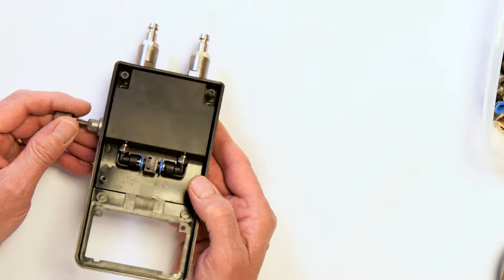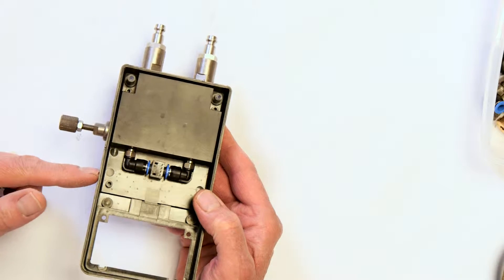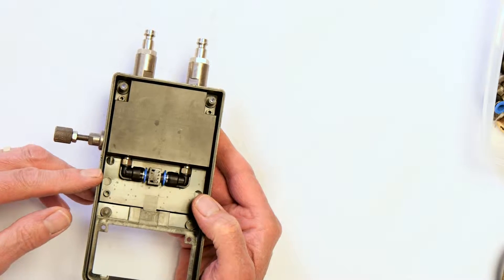So here we can see the valve block has been reassembled into the rear enclosure. We're now going to put this through a further air underwater test just to ensure that it's fully leak proof and all the seals are functioning before we put the wet end back together with the PCB.